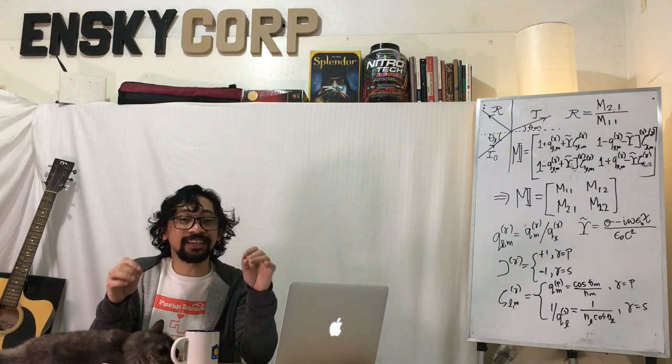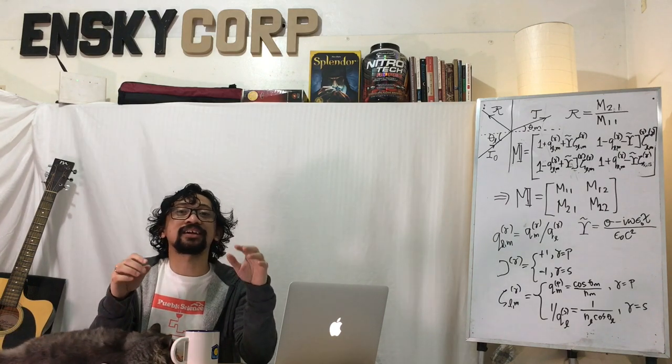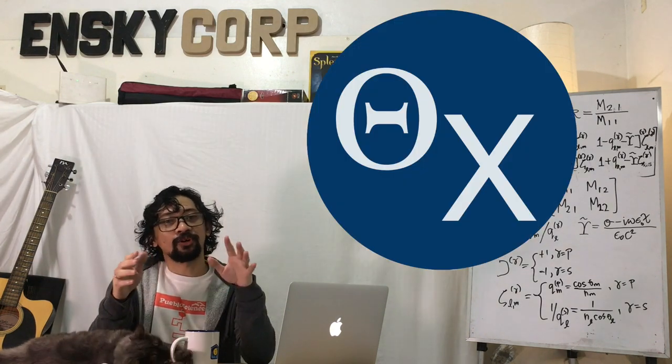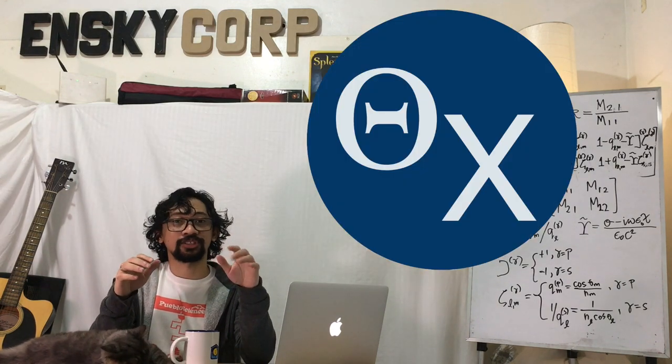We looked for the incident angle that makes the degree of polarization of the reflected light vanish. We call this incident angle the crossing angle.